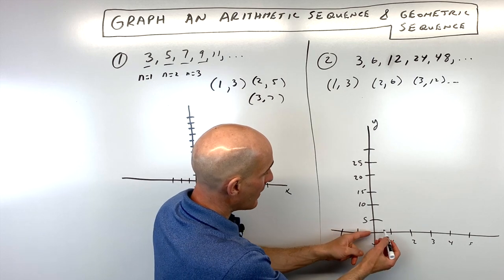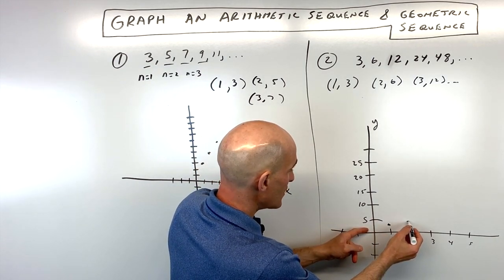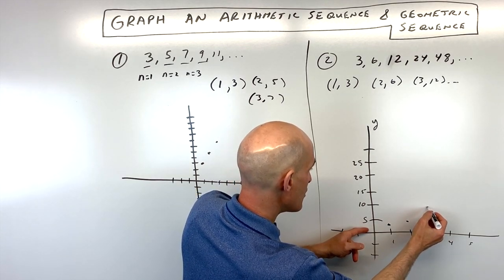If we plot these, let's see what we get. 1, 3 would be right about here. 2, 6 is right about here. 3, 12 is about here.